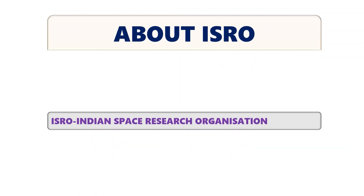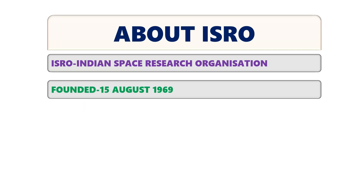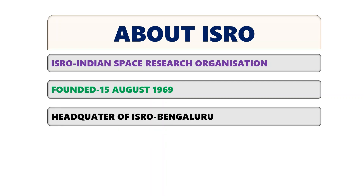First of all, let us understand about ISRO and its formation. The full form of ISRO is Indian Space Research Organization. ISRO was founded on 15th August 1969. The headquarter of ISRO is located at Bengaluru.